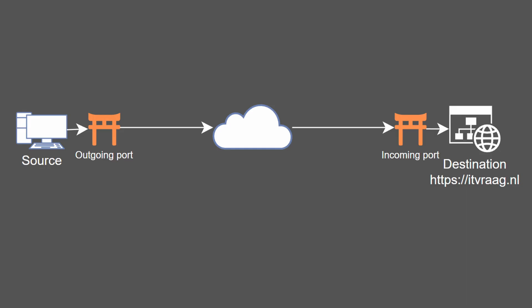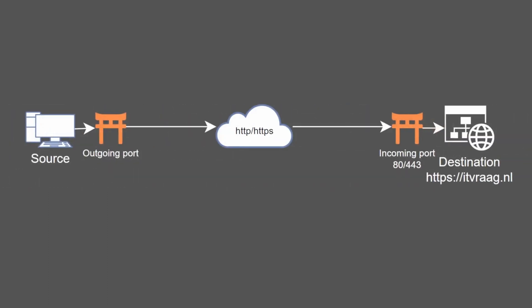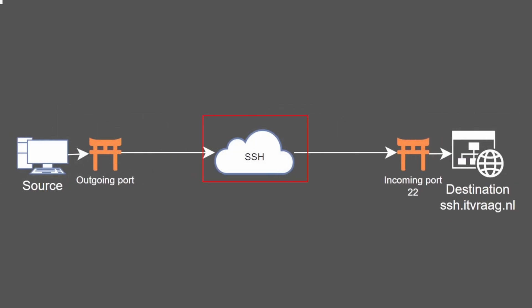Port numbers are gateways that applications or services use to send and receive information between two hosts. For example, when you access a website starting with HTTP, it uses port number 80 on the web server. A website over HTTPS uses port 443. When you connect to a remote client using SSH, it uses port 22. And when you send an email using SMTP, it uses probably port 587.